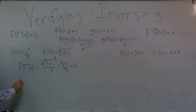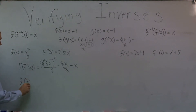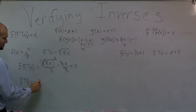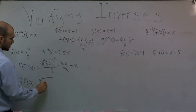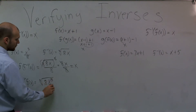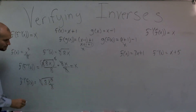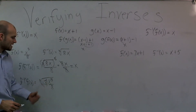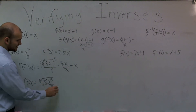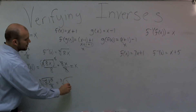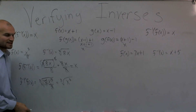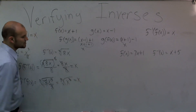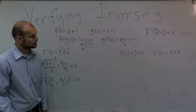Now let's do f⁻¹(f(x)). I plug f(x) into f⁻¹(x), giving me the cube root of 8 times (x³/8). I multiply under the radical first — the 8s cancel — leaving the cube root of x³. The cube root and cube cancel out, and again I'm just left with x. Very good.